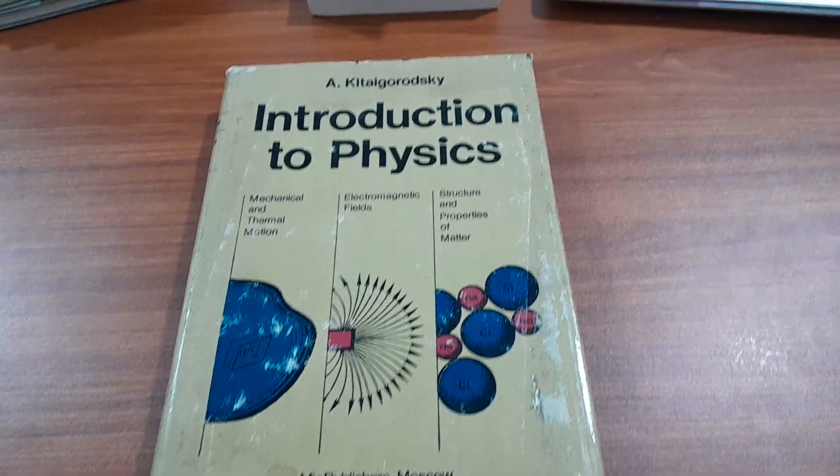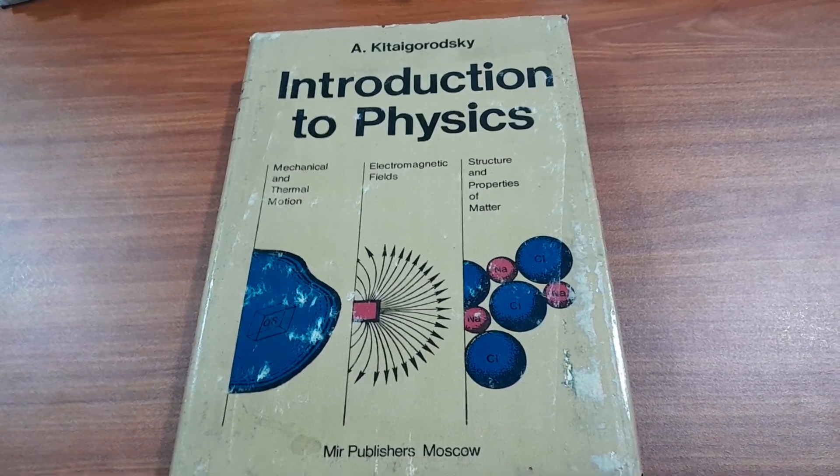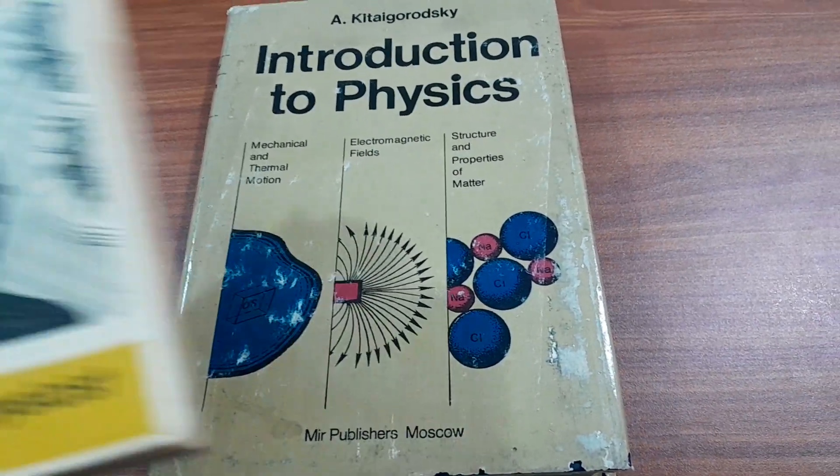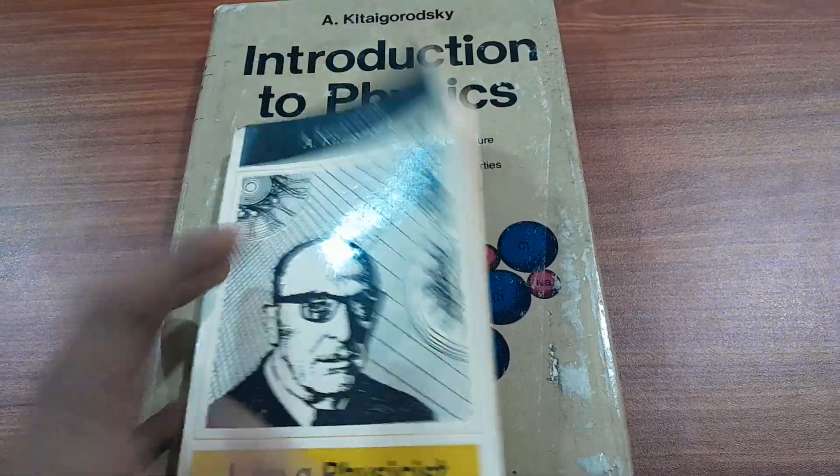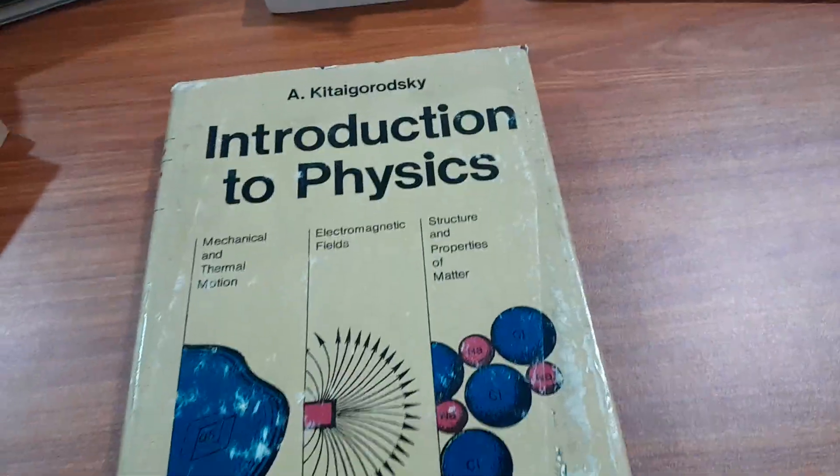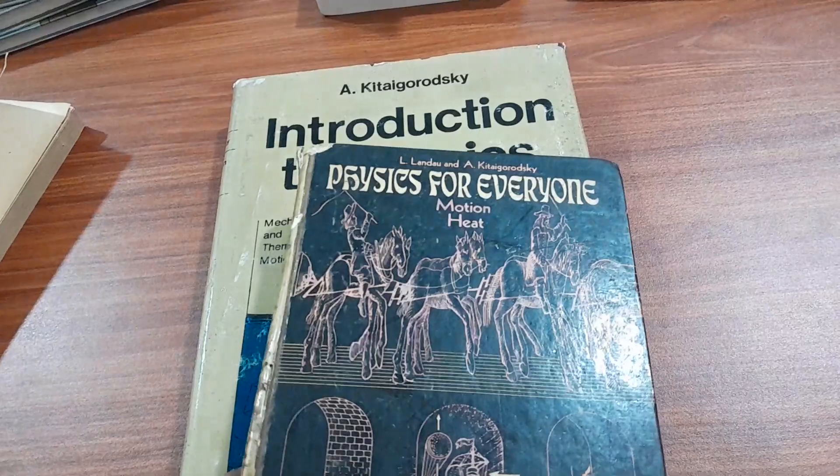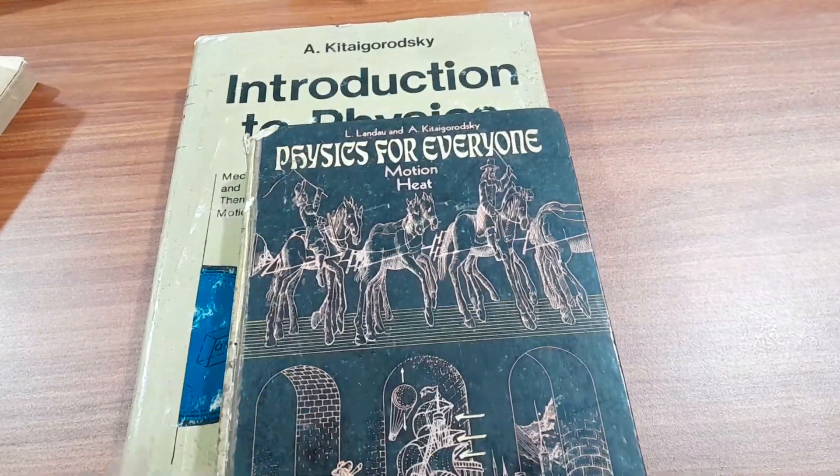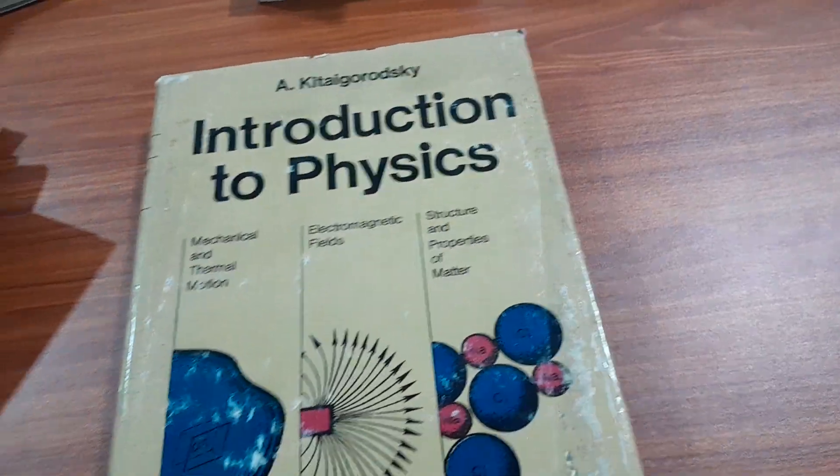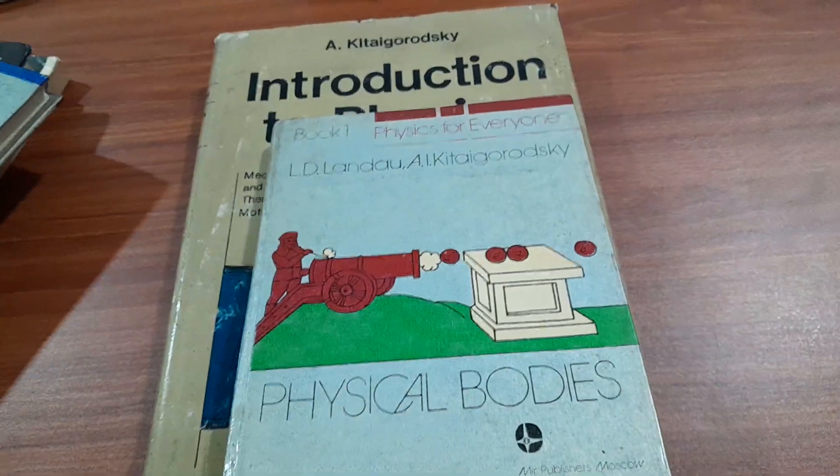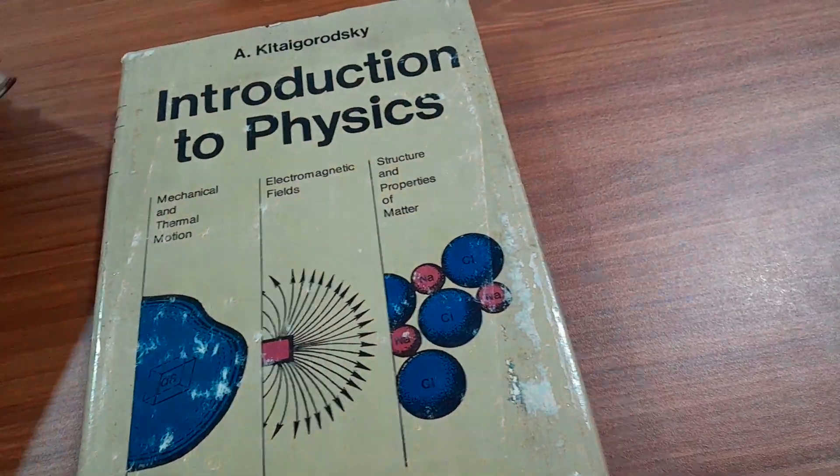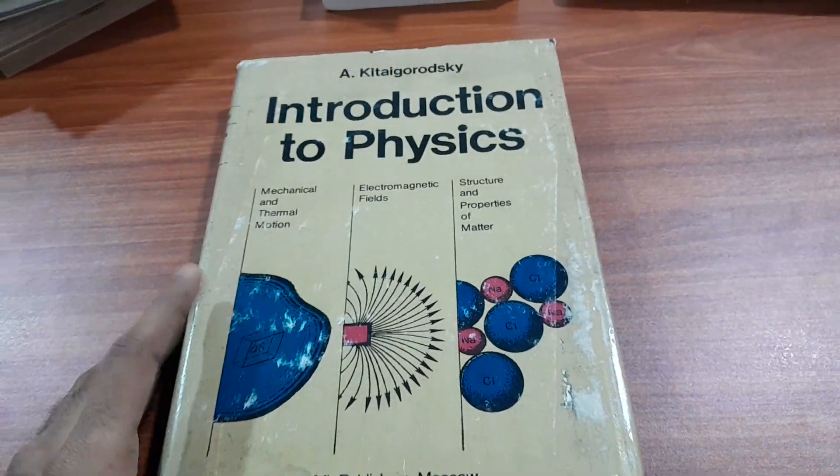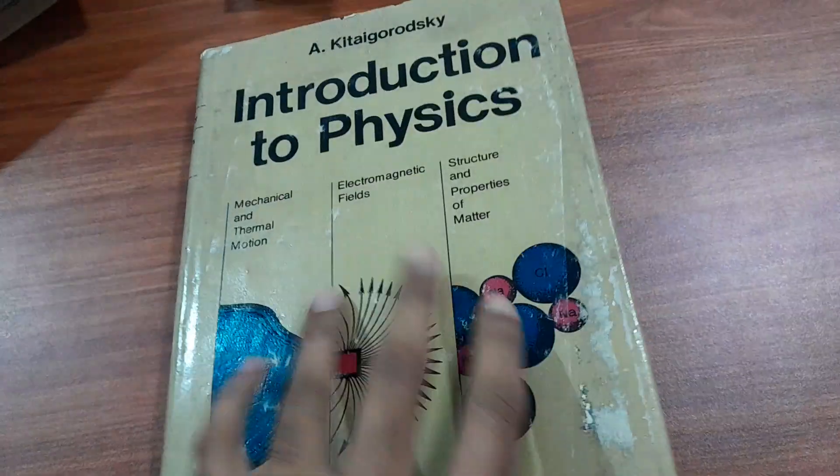An introduction to physics by A. Kitaigorodsky. Kitaigorodsky is a famous physicist. He has an autobiography, I Am a Physicist, and has written many books with Professor Landau. There is physics and motion and heat, molecules, physical bodies, electrons. Part four is also available, which is currently available with me.